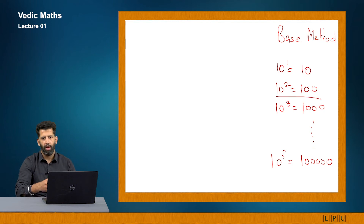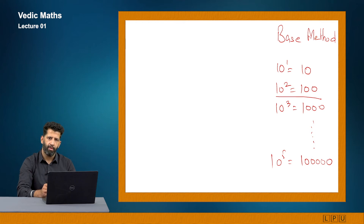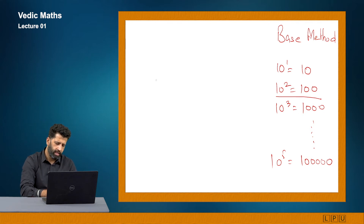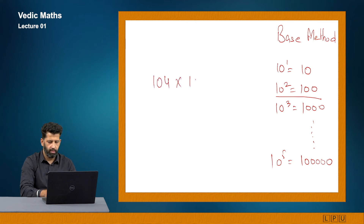To understand the base method, I will first take the example of two numbers near to 100. Why? Because if you perfect this method with base 100, it will be very easy to solve many percentage questions. Let us say I want to multiply 104 with 107.